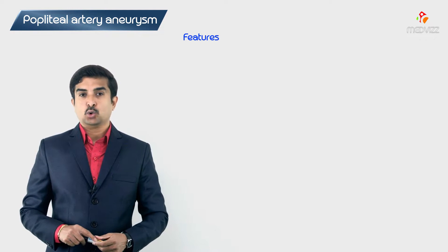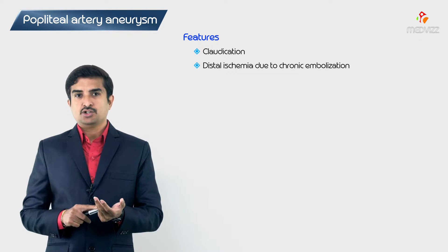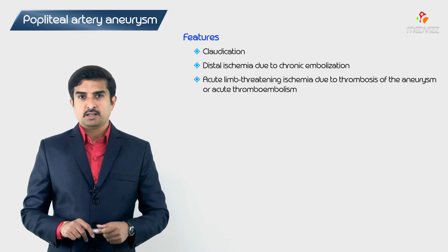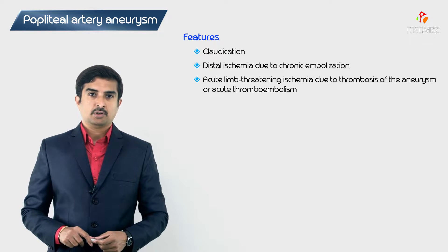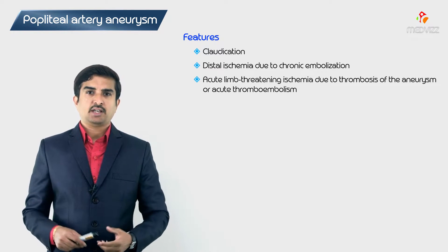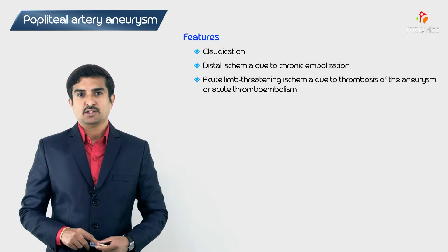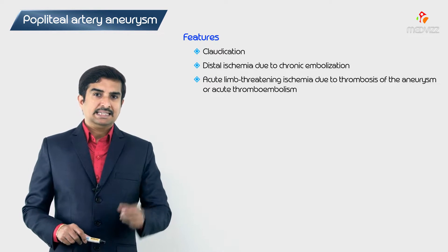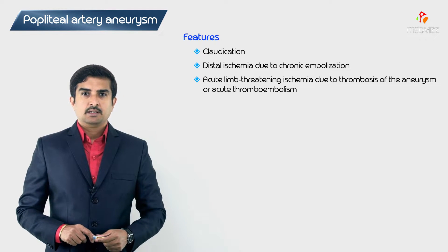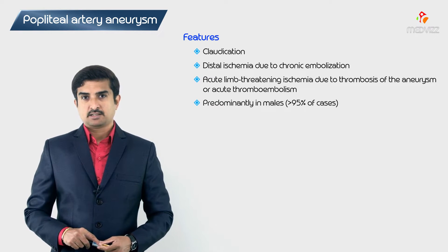When symptoms are present, they are due to a variable degree of lower extremity ischemia, including claudication, distal ischemia due to chronic embolization, or acute limb-threatening ischemia caused by thrombosis of the aneurysm or acute thromboembolism. In the majority of cases, only symptomatic popliteal artery aneurysms are diagnosed readily; otherwise, they are diagnosed incidentally when asymptomatic.